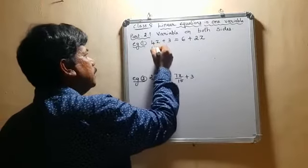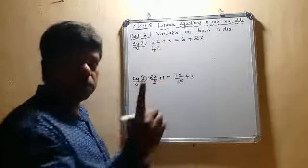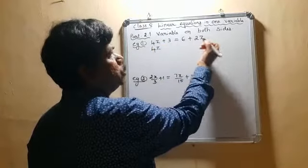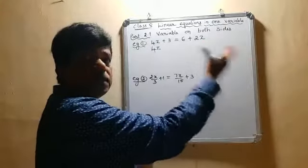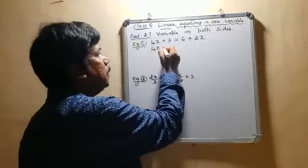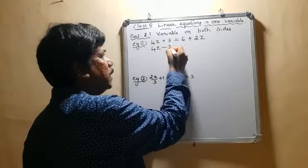4z already has a variable z. From this side, bring this 2z from the right side to the left side. As it has a positive sign, it will become a negative sign, so minus 2z.